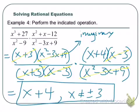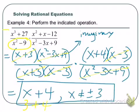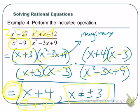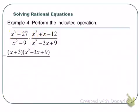Let me remind you one more time why that exclusion is there. If I plug 3 into my answer, I get 3 plus 4, which equals 7. But if I plug 3 into the original problem, I get 3 squared minus 9, which gives me a 0 in the denominator. So 3 is bad in the original expression but works fine in the simplified answer. We need this exclusion to show that these expressions are only equal as long as x is not plus or minus 3 — we're qualifying this equal sign.